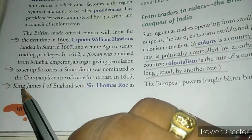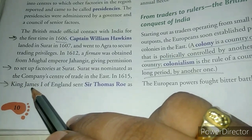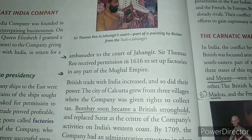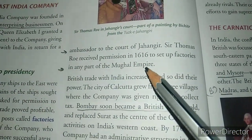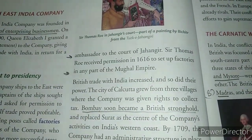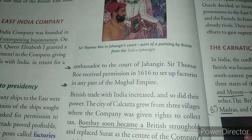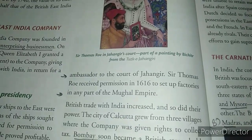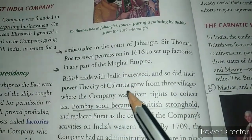Another explorer who came to India was Sir Thomas Roe, who was sent by King James I of England as ambassador to the court of Jahangir. Sir Thomas Roe received permission in 1616 to set up factories in any part of the Mughal Empire. The difference between Hawkins and Roe's permissions: Hawkins got permission only for Surat in Gujarat, whereas Thomas Roe got permission to set up factories in any part of India.